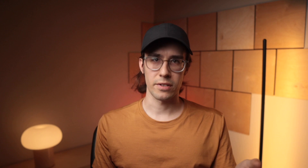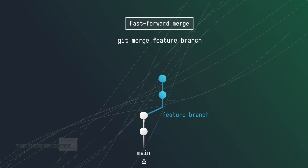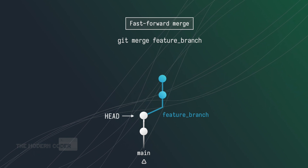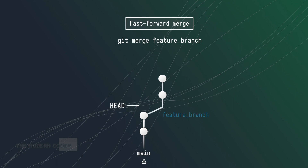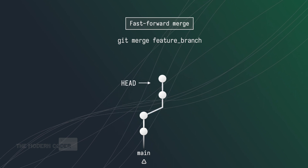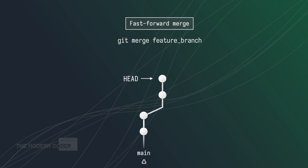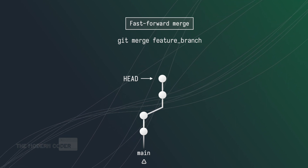With our feature branch up to date with the remote head commit, we have some easier merging options ahead of us. If we run a simple git merge, we're going to get what's called a fast-forward merge. Git will simply move the head pointer from the tip of the mainline branch all the way up to the tip of your feature branch, essentially absorbing the feature branch into mainline without adding any extra commits. This is possible because we used rebase first to re-anchor our feature branch.